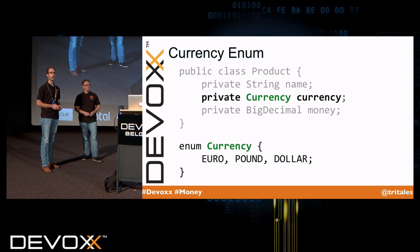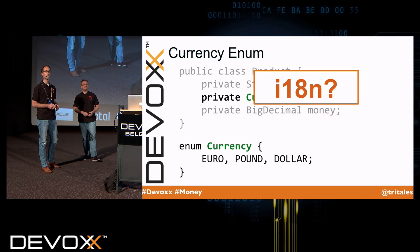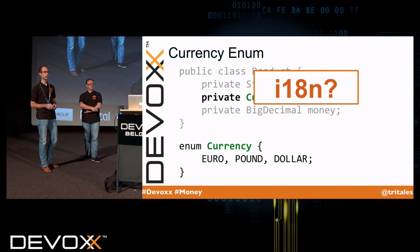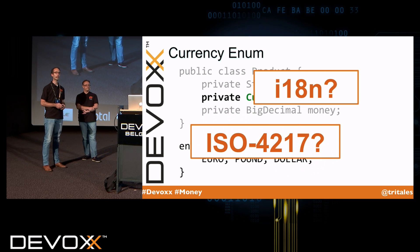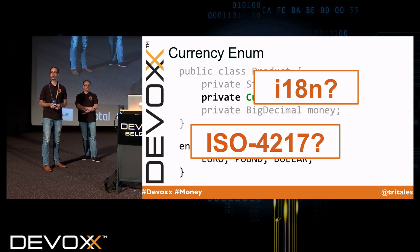So now we have a fixed set of currencies that we can use. It's a little bit better, but still some issues — like for example, what about internationalization? And what about standardization? Like the ISO 4217 standard that represents currencies as three-character codes.